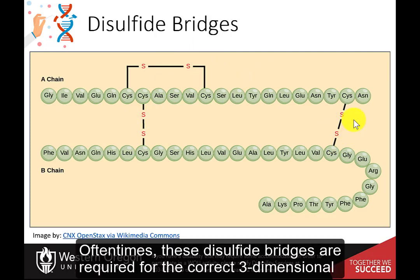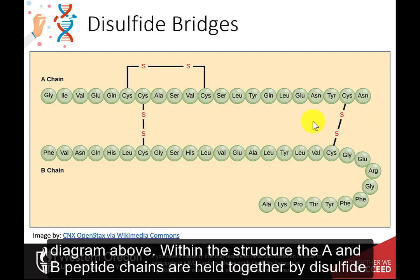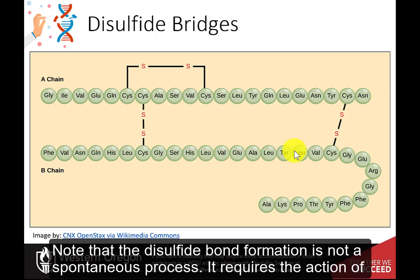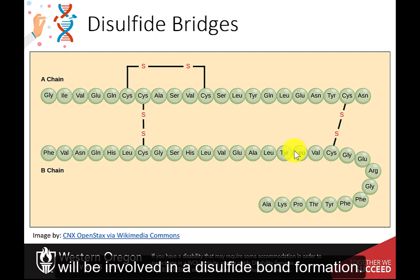Oftentimes, these disulfide bridges are required for the correct three-dimensional structure of the protein to be created. The insulin peptide hormone is shown in the diagram above. Within this structure, the A and B peptide chains are held together by disulfide bridges. Insulin would lose activity without these critical linkages. Note that disulfide bond formation is not a spontaneous process; it requires the action of an enzyme to mediate formation. Thus, not all cysteine residues within a protein structure will be involved in a disulfide bond formation.